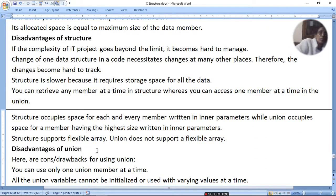Structure occupies space for each and every member written in the inner parameter, while union occupies space for members having the highest size. Structure supports flexible array. Union does not support flexible array.